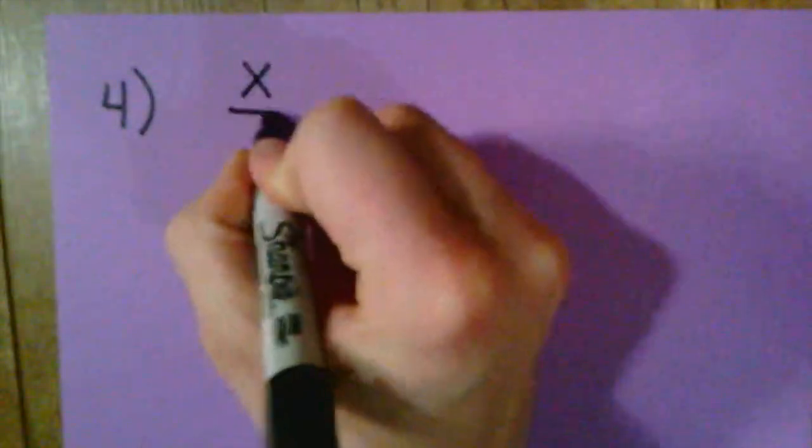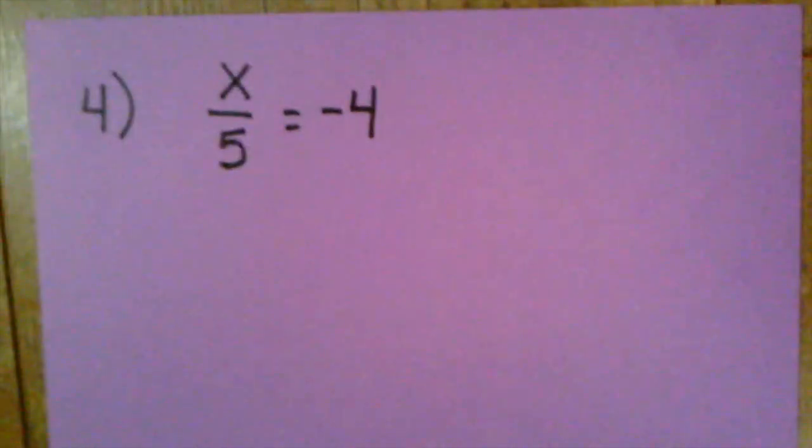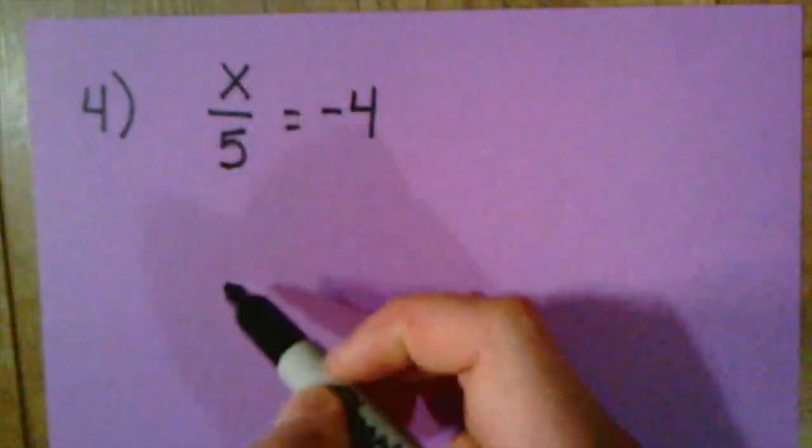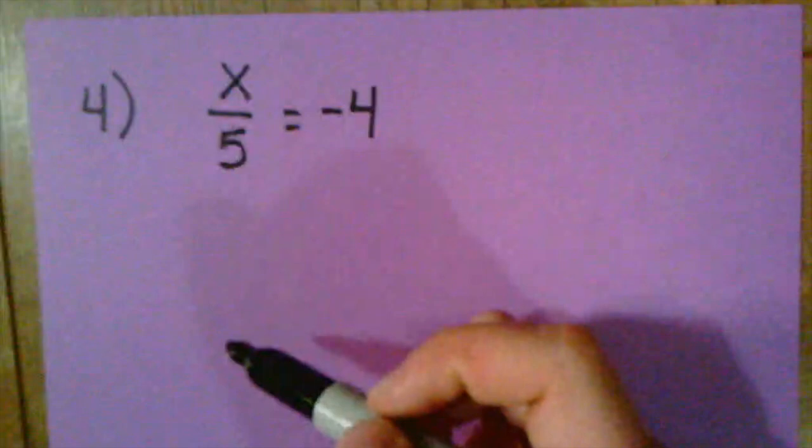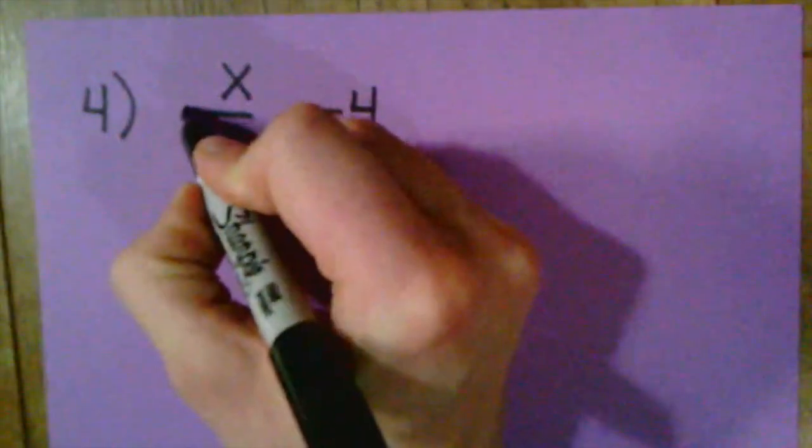And for our final example here, we'll try some division. We have the problem X divided by 5 equals negative 4. So again, thinking about inverse operations, I already see division on this side with X and I want to get X by itself. So in order to undo the division, I'm going to multiply.